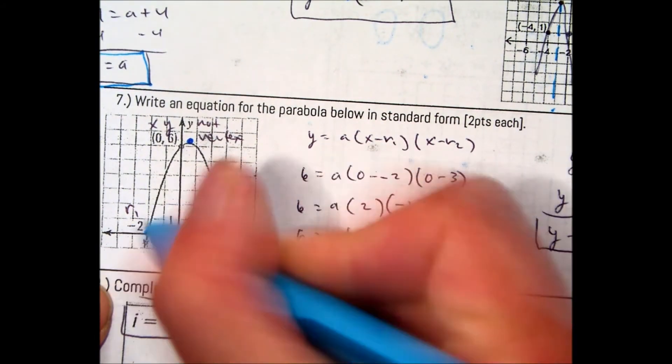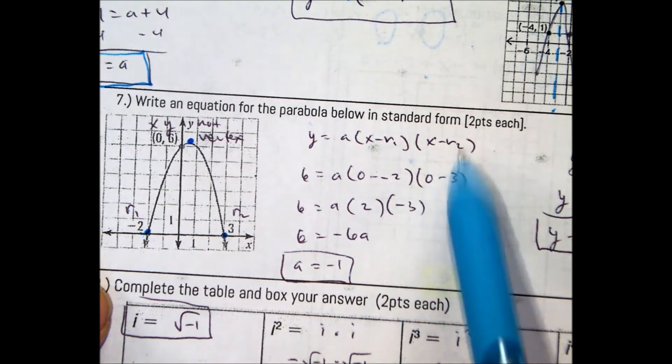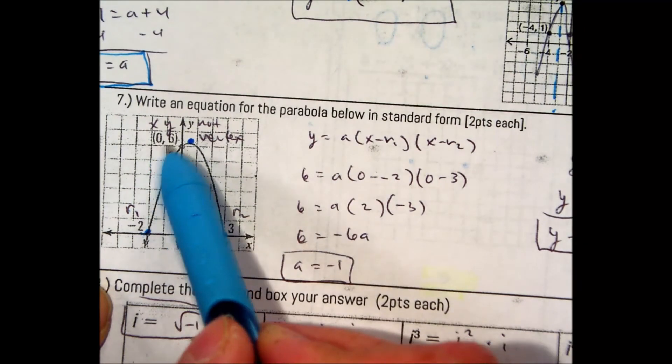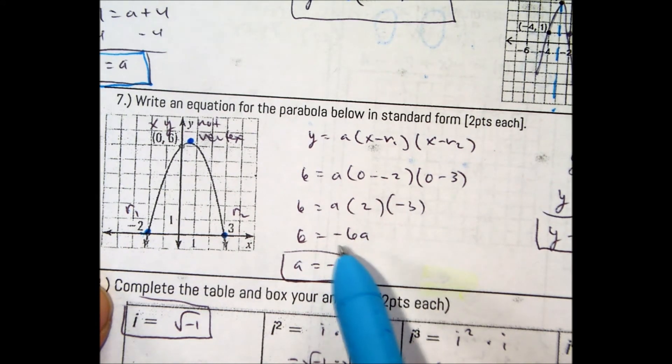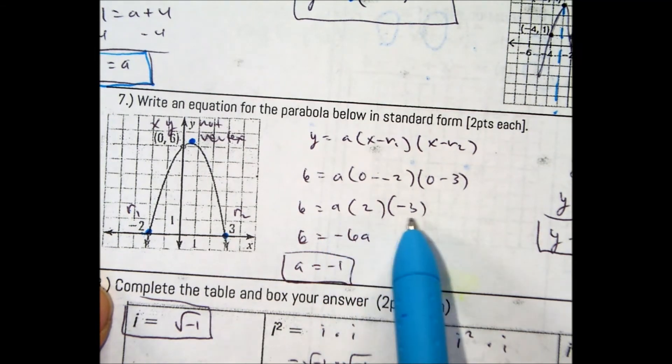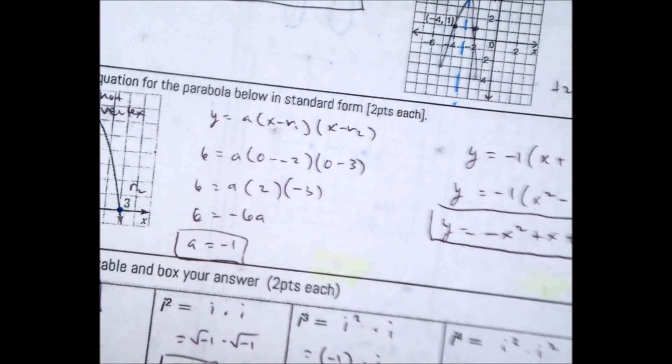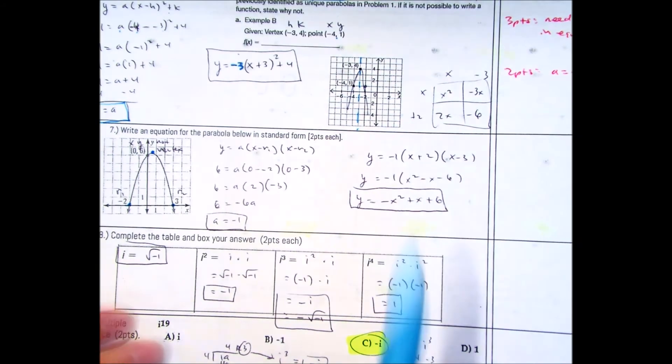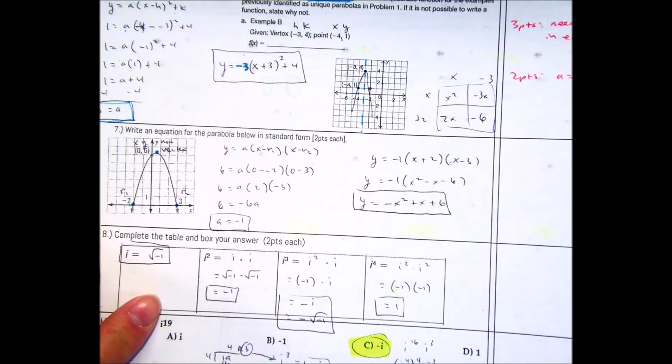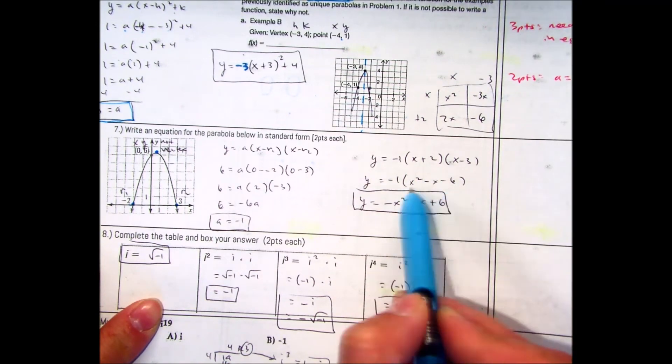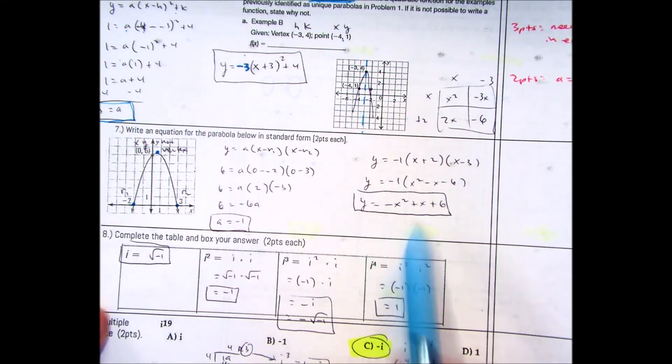But I have these. These are my x intercepts or my roots. R1 or root 1 is negative 2 and root 2 is 3. If I substitute in my value here, negative 2 and negative 3, I have an x value of 0 and a y value of 6. So x value is 0, y value is 6. Don't be late tomorrow. Bad day to be late tomorrow. 2 times negative 3 is negative 6. And you divide by negative 6 on both sides, you get a equals negative 1. If you put that back into your formula, if you put a value back to negative 1 here, I have negative 1 times quantity x plus 2 x minus 3. If I use FOIL or the box, then I have now standard form. So this is factor to intercept form. This is standard form. Distribute the negative 1. You have y equals negative x squared plus x plus 6.